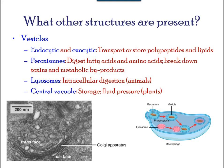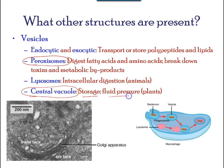Peroxisomes are small round organelles enclosed by single membranes. They carry out oxidation reactions that break down fatty acids and amino acids. The central vacuole plays a key role in regulating the cell's concentration of water in changing environmental conditions.